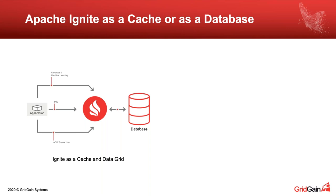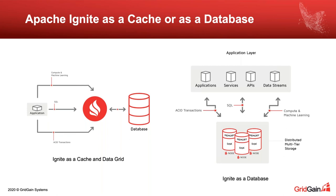Ignite caches all the data in memory and can write through all changes to your external database or backend system. The benefit is obvious — you're offloading or accelerating your applications and backend system. How is Ignite different from classical caches such as Redis or Memcached? Ignite as a cache provides SQL APIs, ACID transactions, and compute APIs, to name a few. The other prominent use case is Ignite as a database, where the storage engine uses both an in-memory tier and a disk tier via Ignite native persistence, which we'll also discuss as an out-of-memory preventive measure.